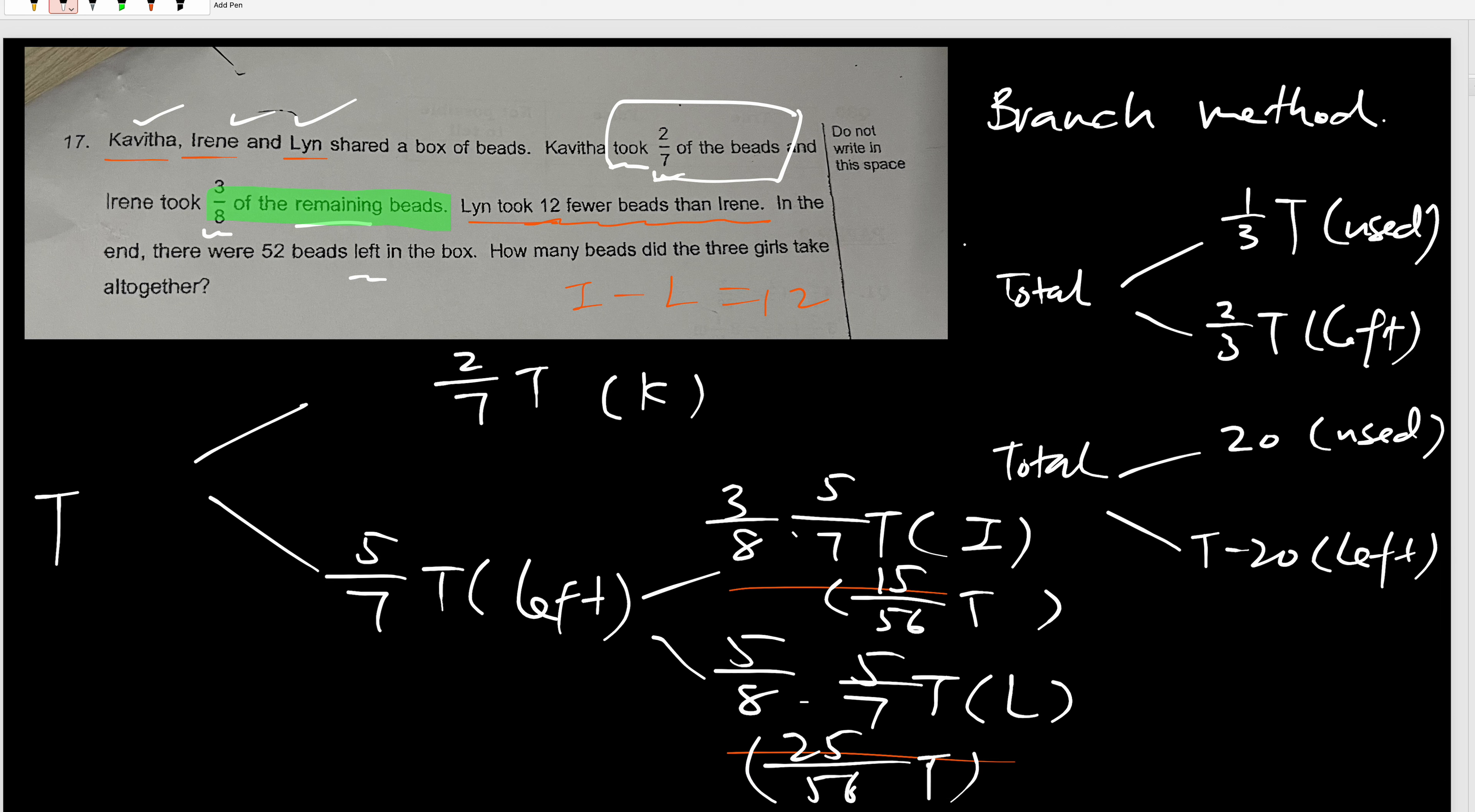So you use Irene, Irene minus Lin, which is 15/56. Let me see, did I make a mistake? Ah, I'm wrong. Do you know why? Because they say Lin took 12 fewer. Because I realized, right, in the end there were 52 bits left in the box. So that means the rest is not Lin. You can make a mistake along the way, but somehow you need to read the question. If you make a mistake, you need to course correct.